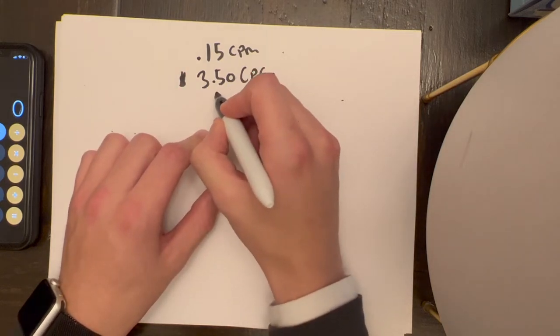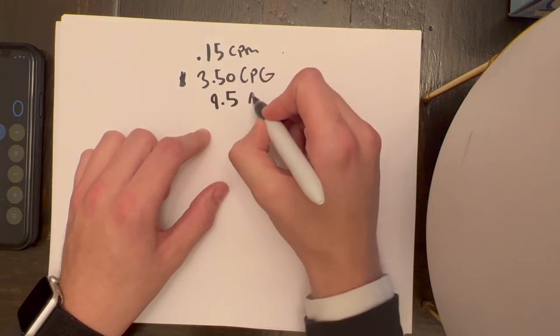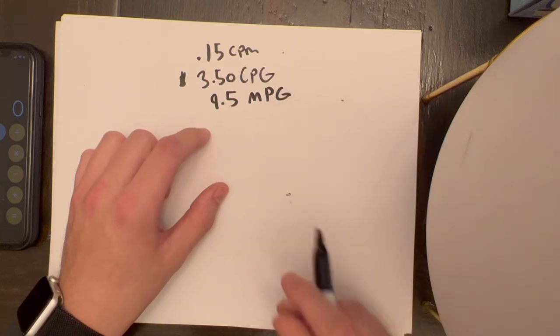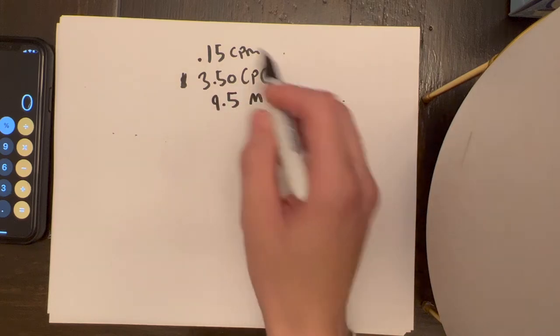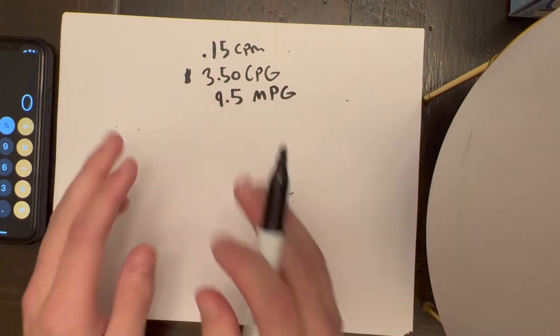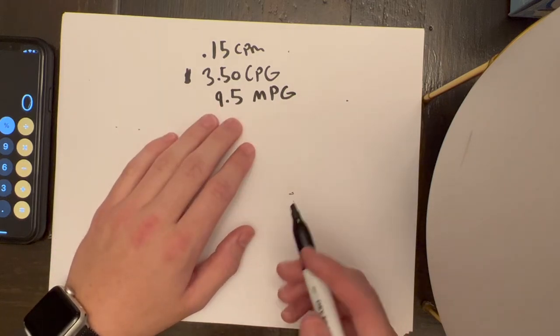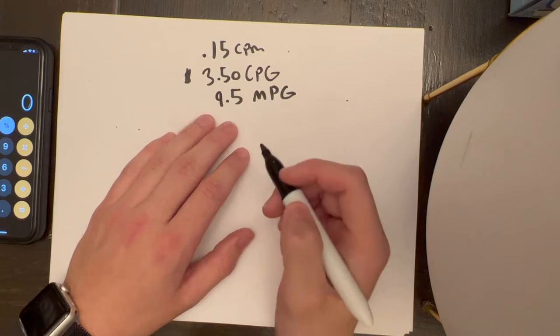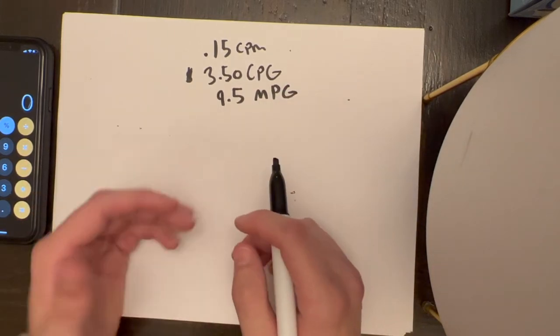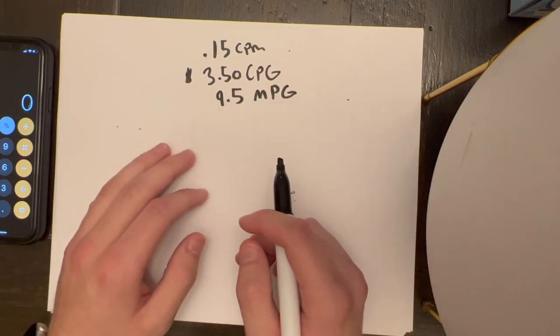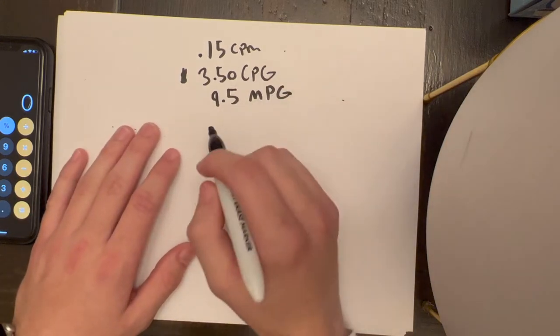Then your next thing would be to get your miles per gallon average. This is how you're going to determine whether you're calculating for your loaded or unloaded cost per mile. We're going to be doing our unloaded miles per gallon. In this truck, our unloaded miles per gallon is around 9.5. Again, this is a box truck, but you can do this for semis or any truck for that matter.